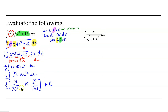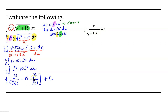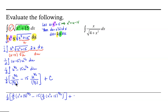Now we're not quite done. We need to replace our u's with the original definition that u was x squared plus 15. Let's take care of this division by a fraction and multiply by the reciprocal. So we'll have one-half times two-fifths, x squared plus 15 to the five-halves power, minus 15 times two-thirds, x squared plus 15 to the three-halves power, plus c.